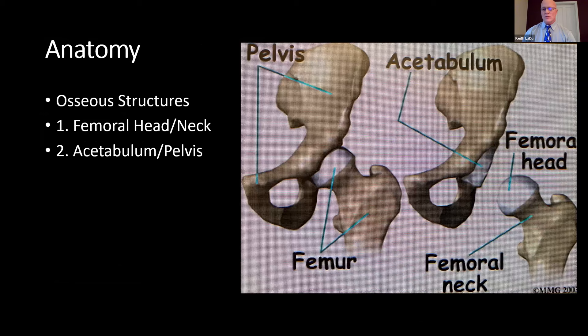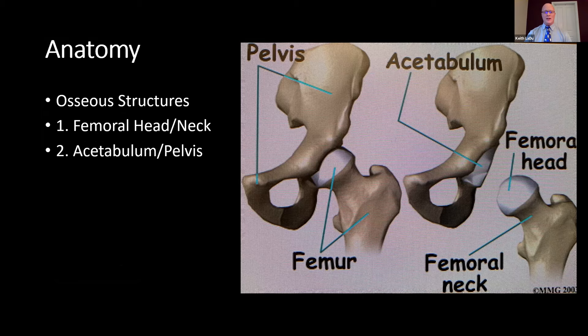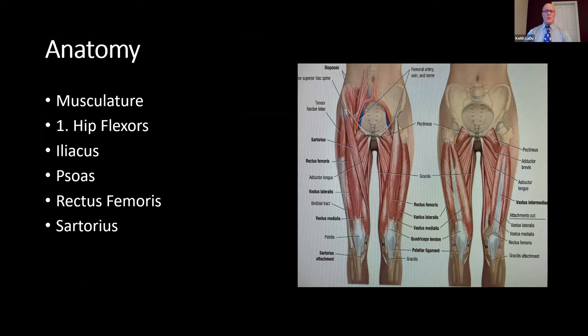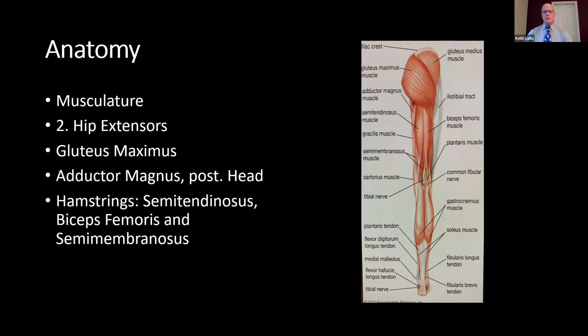To begin with the bony structures, you have the femoral head and femoral neck that make up the femoral side, and then the acetabulum is part of the pelvis. As far as the musculature, we have first the hip flexors that include the iliacus, the psoas, rectus femoris, and the sartorius. Hip extensors include the gluteus maximus and the posterior head of the adductor magnus.